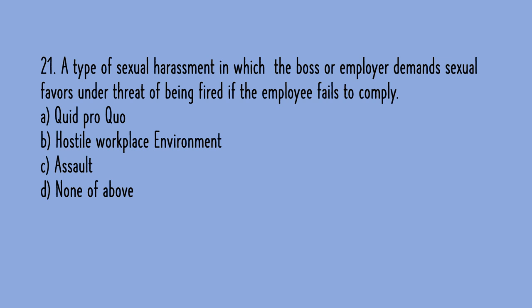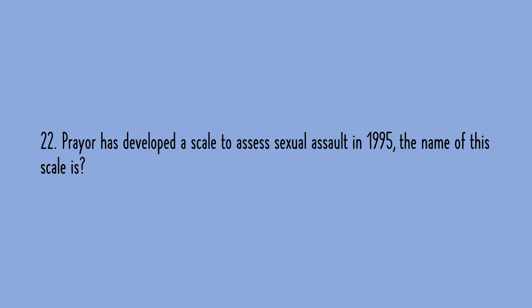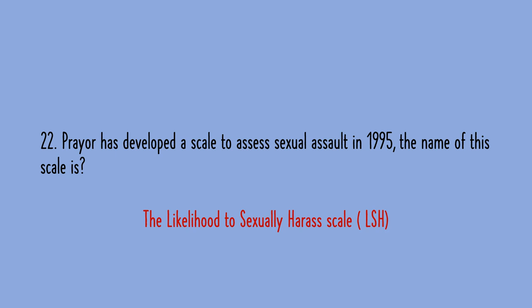MCQ 21: A type of sexual harassment in which the boss or employer demands sexual favors under threat of being fired — option A: quid pro quo, option B: hostile workplace environment, option C: assault, option D: none of the above. The correct answer is A, quid pro quo. MCQ 22: Pryor developed a scale to assess sexual harassment in 1995. The name of this scale is the Likelihood to Sexually Harass Scale, denoted as LSH.